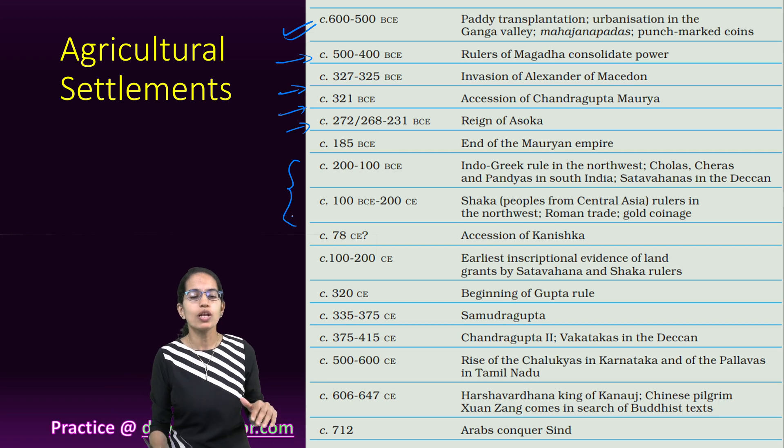Ashokan edicts are important. The rock edicts could be seen across India. Those marked in red triangles are the major ones, those in squares are the minor ones, and pillar inscriptions are marked with dots.